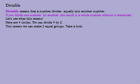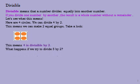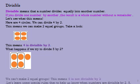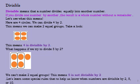Let's see what this means. If we have 4 circles, we can divide 4 by 2. We can make 2 equal groups of those 4 circles, every 2 circles in a group. We get 2 groups without any circle left alone. This means that 4 is divisible by 2. But if we try to divide 5 by 2 — with 5 circles, every 2 in a group — 1 circle is going to be left alone. So 5 is not divisible by 2 because the remainder is 1.